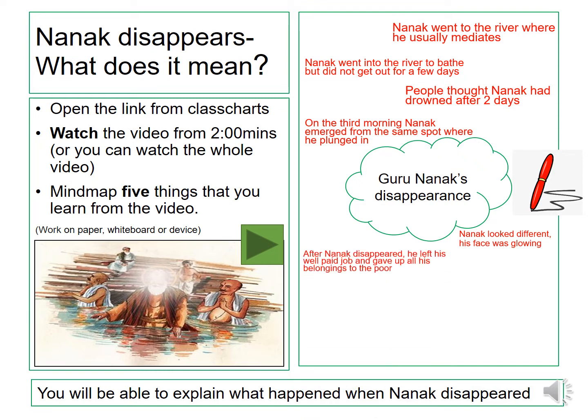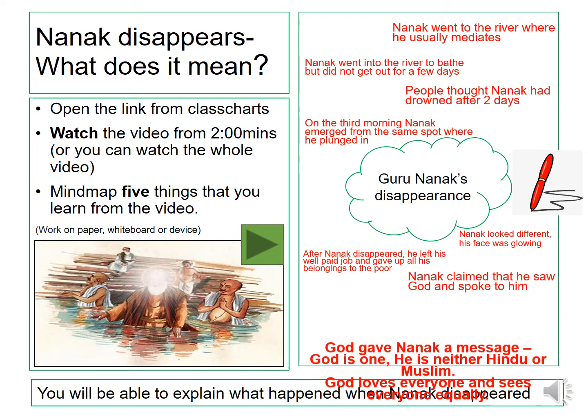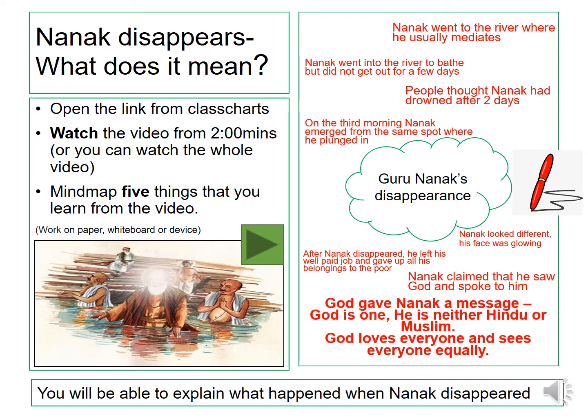After Nanak disappeared, he left his well-paid job and gave up all his belongings to the poor. Nanak claimed that he saw God and spoke to him, and God gave Nanak a message: God is one, he is neither Hindu nor Muslim, and God loves everyone and sees everyone equally.